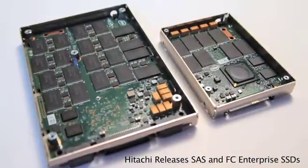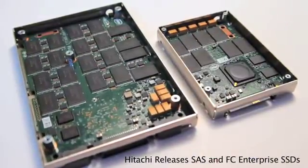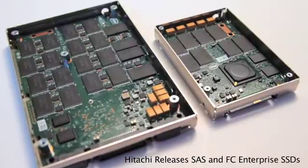It comes in a 2.5-inch, 6-gigabit SAS interface for new system designs. It also comes with a 3.5-inch fiber channel interface for existing legacy infrastructure.